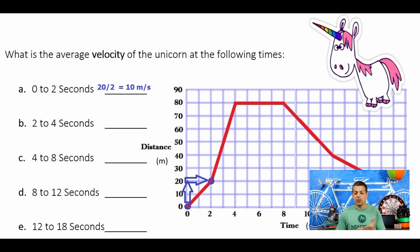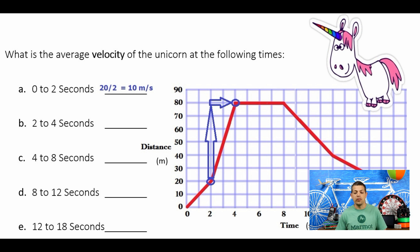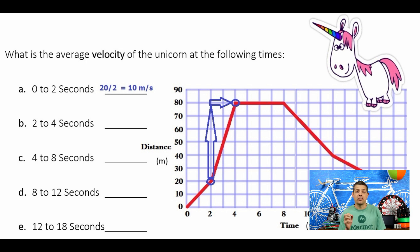We have distance in meters and time in seconds. For 2 to 4 seconds, I find the change in distance — that's always over time in the velocity equation. At 2 seconds we're at the 20-meter mark, and at 4 seconds we're at 80 meters. That's a change of 60 meters divided by 2 seconds, giving a velocity of 30 meters per second.